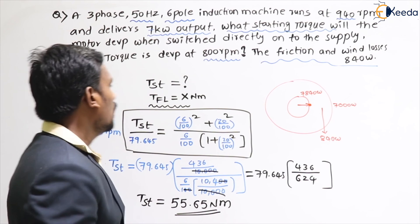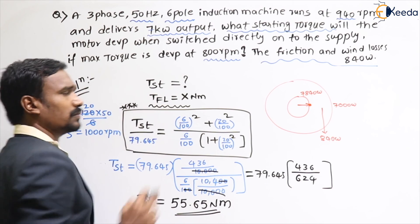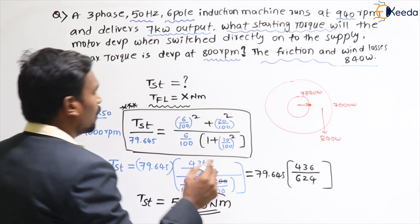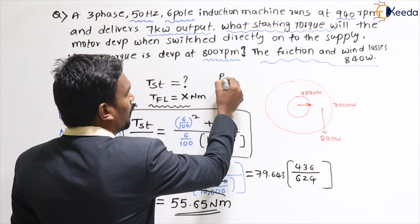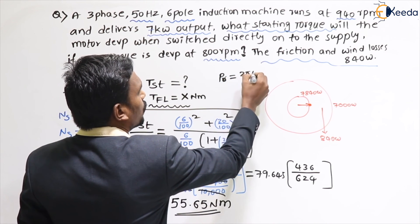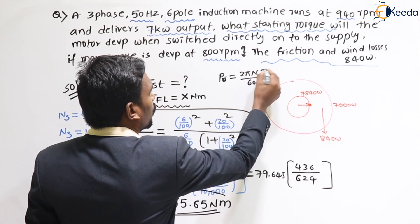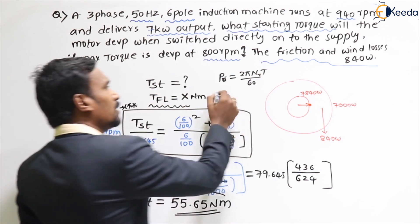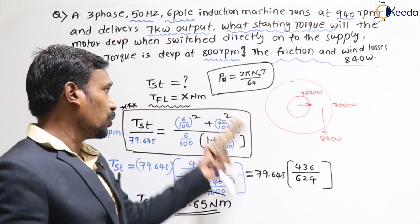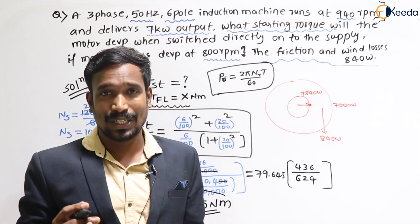This is a very straightforward problem once you know the key formulas. The highlight of this problem is the derived ratio formula for starting torque to full load torque, and the rotor power output formula: P_rotor = 2π × rotor speed × T / 60. When you know these two, you can solve the problem easily.